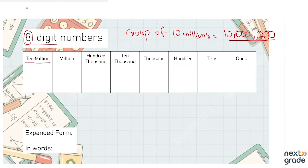Let's write our number over here. The number is 2, 5, 4, 5, 0, 6, 0, 5 — so we have a number and it is an eight-digit number. You can count it yourself and we are going to put this eight-digit number into the place value chart.